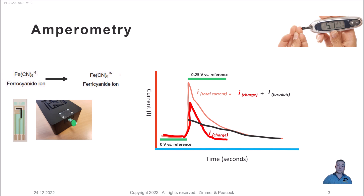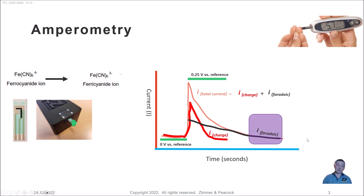A Faradaic current means it's due to an electrochemical process — i.e., the oxidation of ferrocyanide to ferricyanide. A non-Faradaic process is, for example, the rearrangement of ions due to the application of that potential. Charging current is the current due to a change in voltage — the electrode is essentially acting like a capacitor charging up. That's why most glucose strips give a result in about five seconds: you can't measure in one or two milliseconds because a lot of that signal would be non-specific charging current. They wait approximately five seconds to get the specific Faradaic signal.